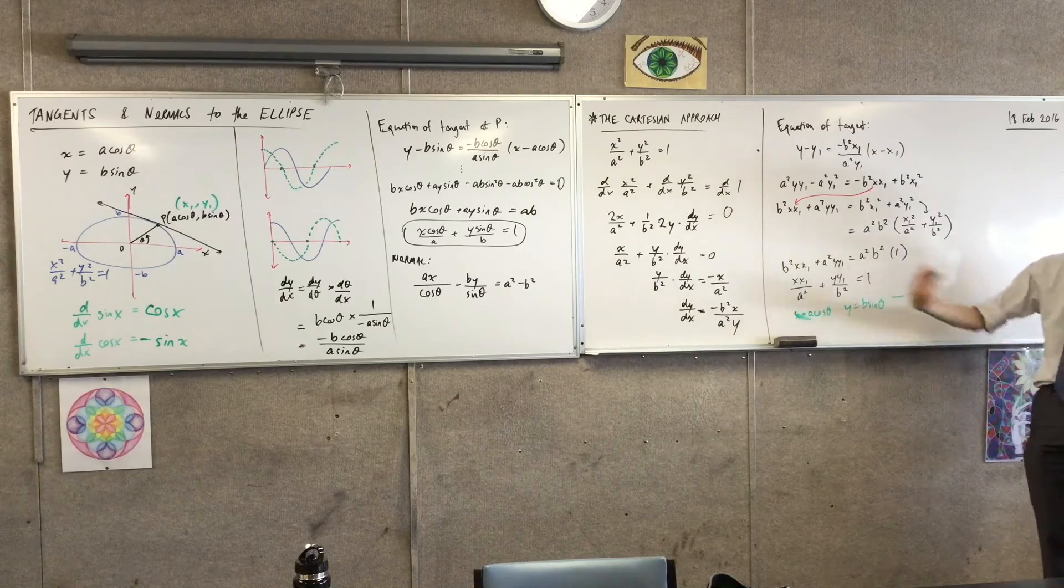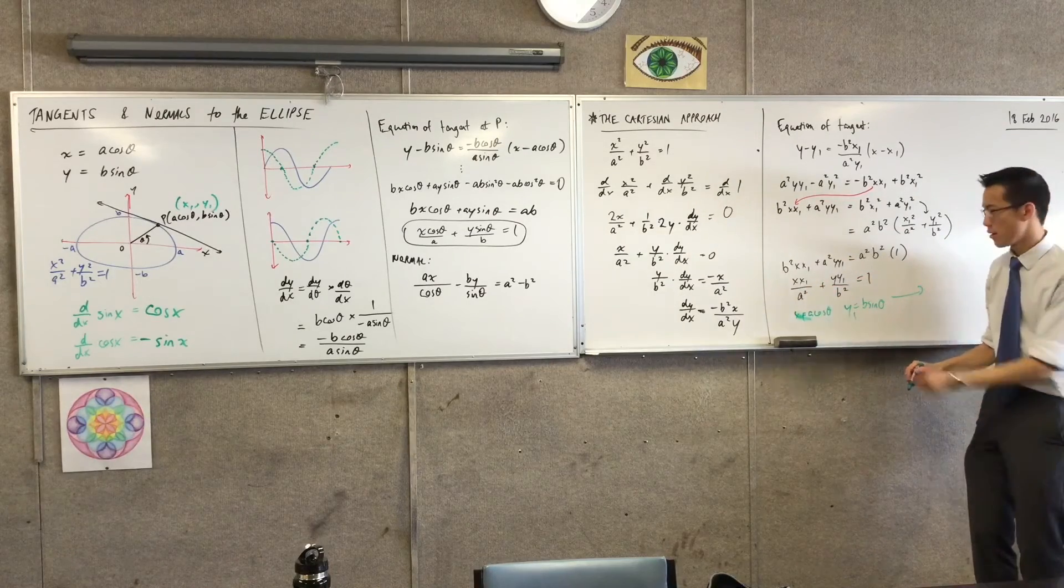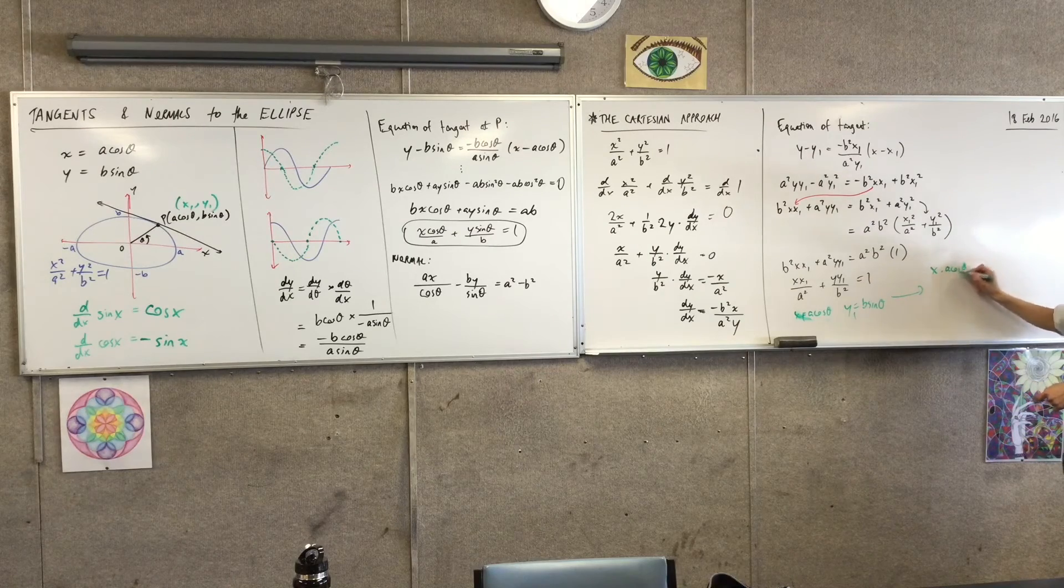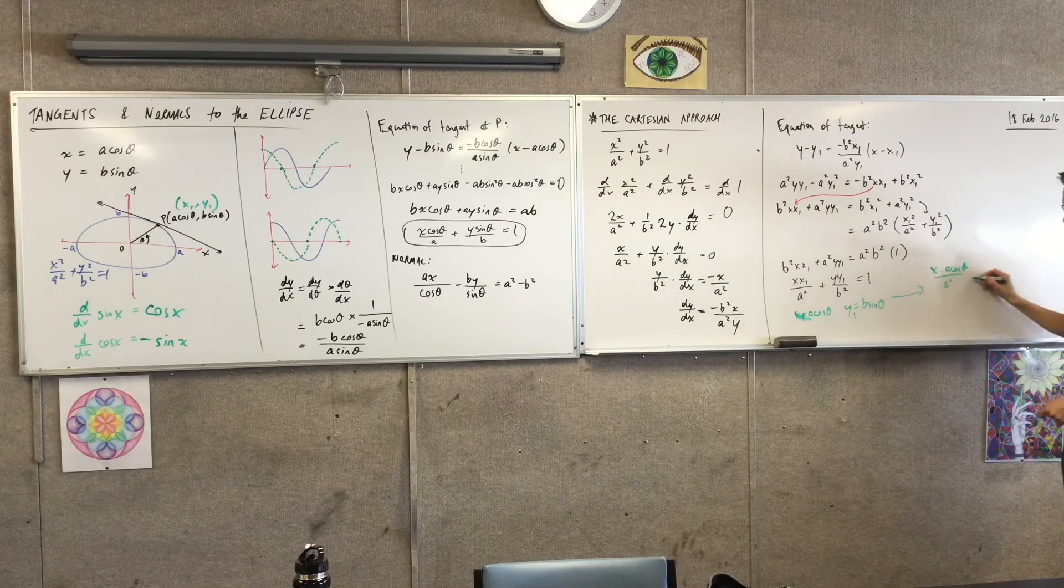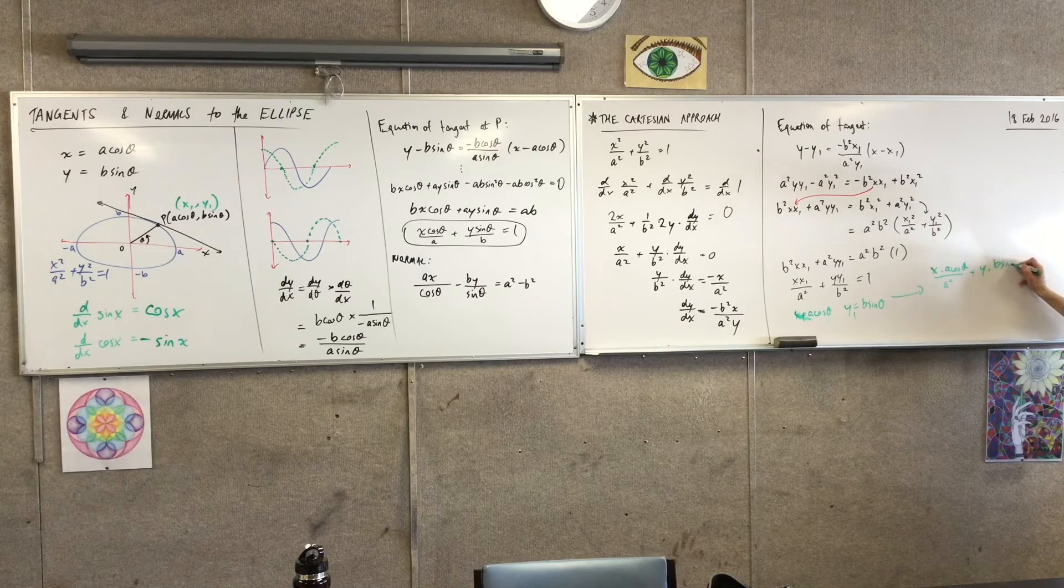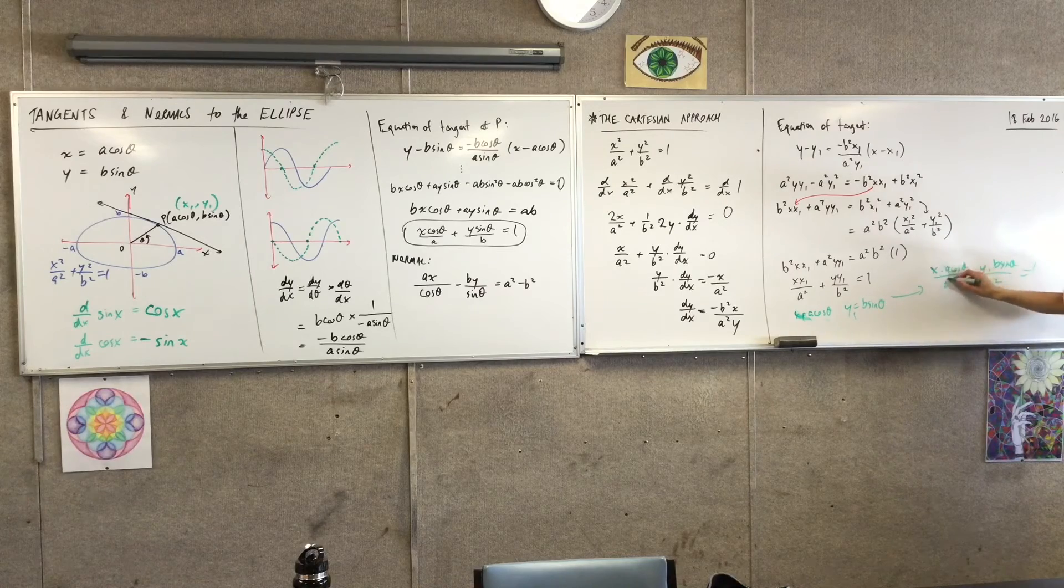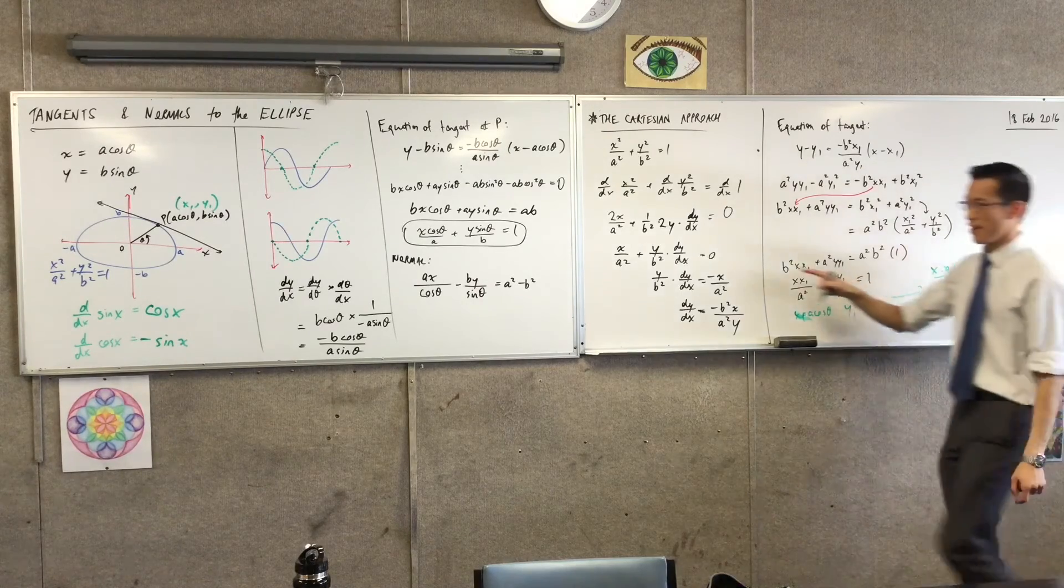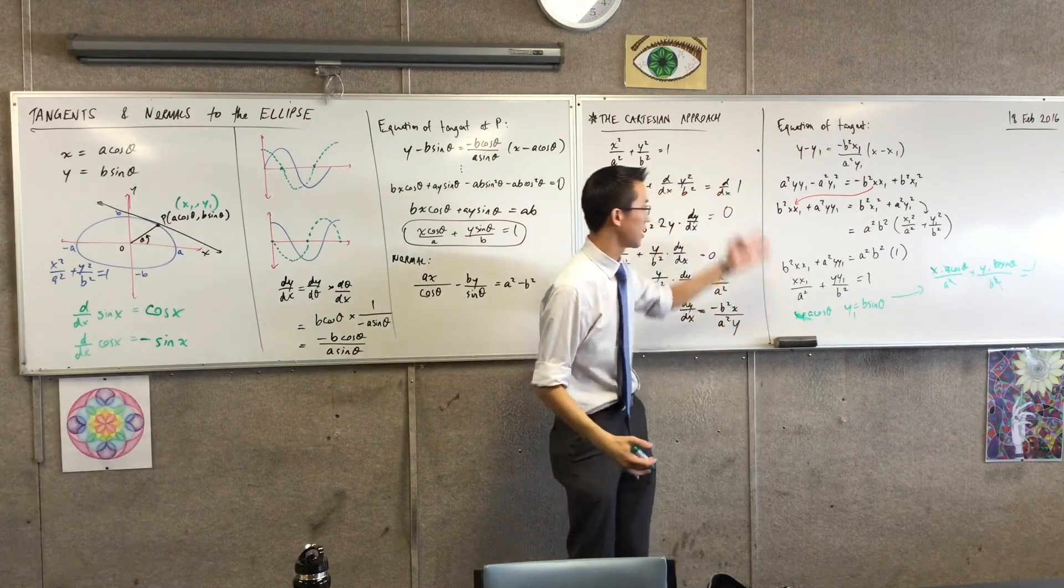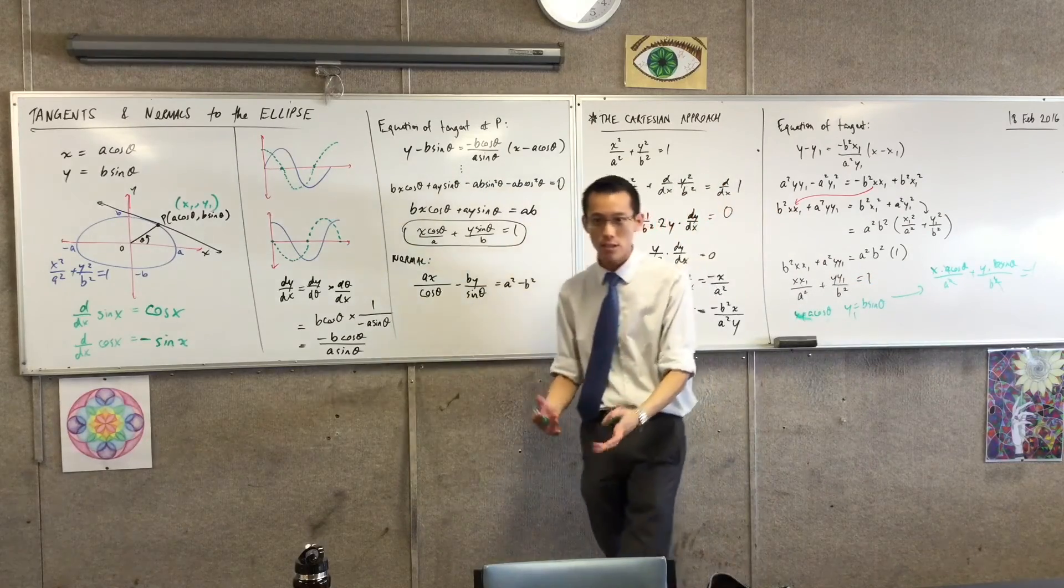Watch what happens as we substitute in for x₁, x₁, and y₁. You see that? Over here, I'm going to get x times a cos theta on a squared. And then here, I'm going to get y times b sine theta on b squared. And it's still 1. Cancel, cancel, cancel, cancel, cancel. Boy, that looks familiar, right? So just to verify, you can see that the Cartesian approach and the parametric approach do give us the same result.